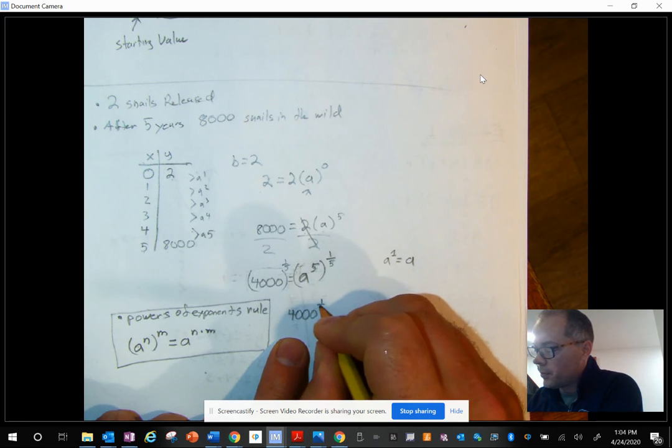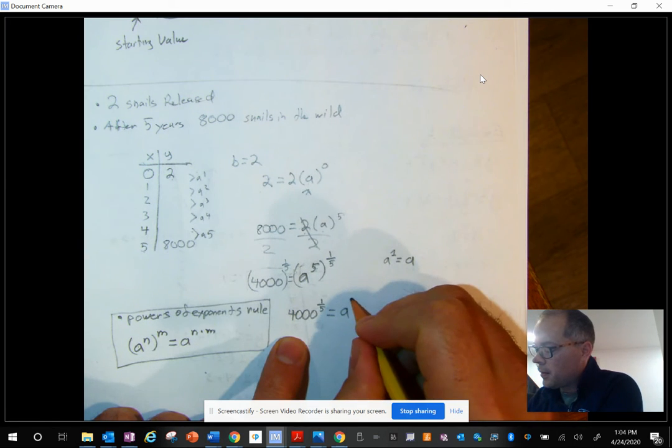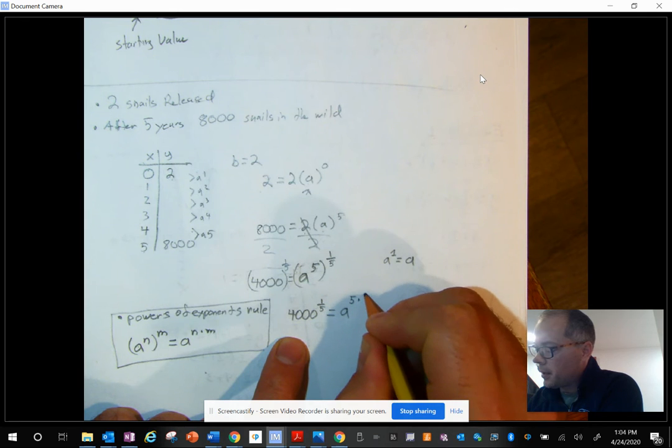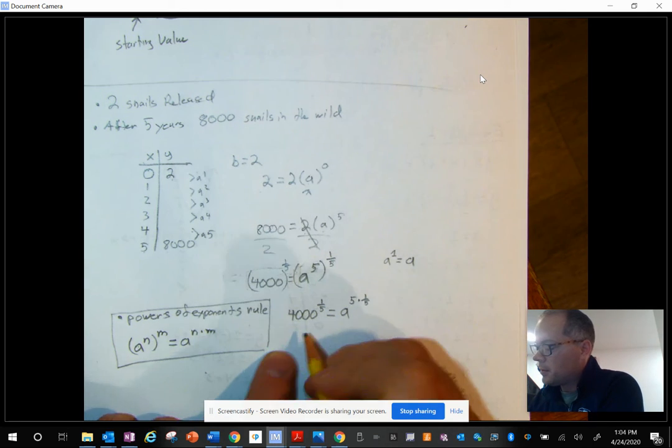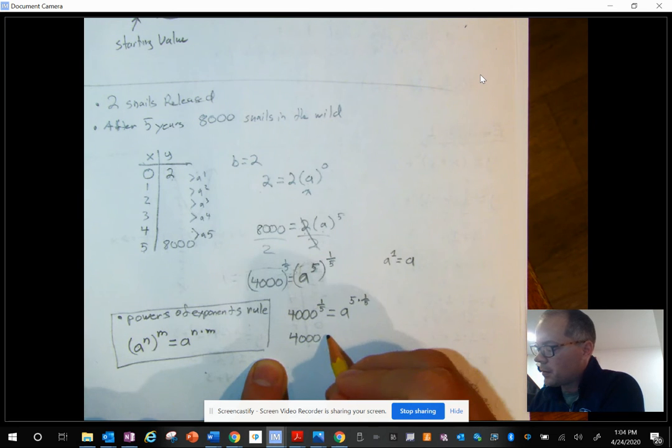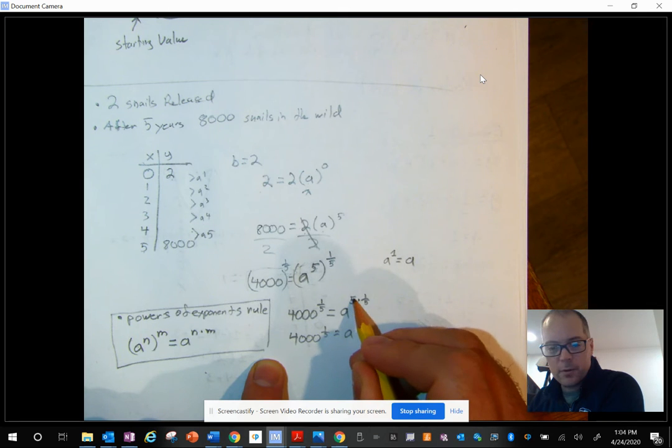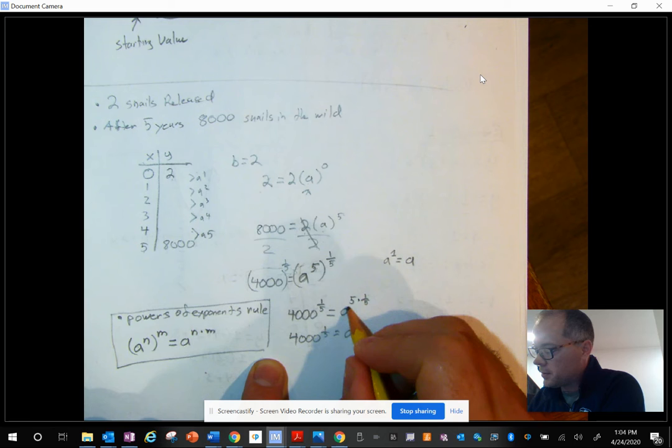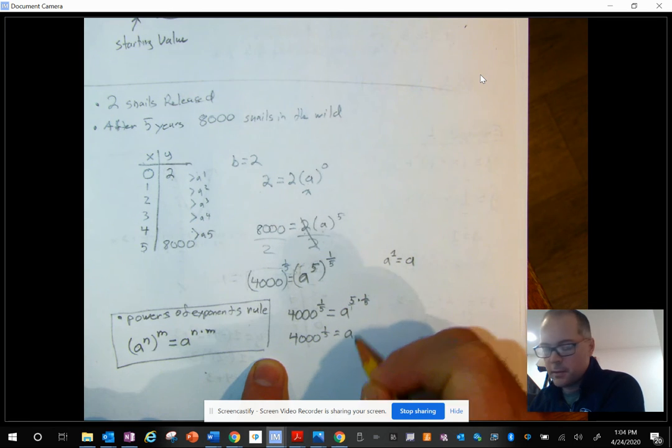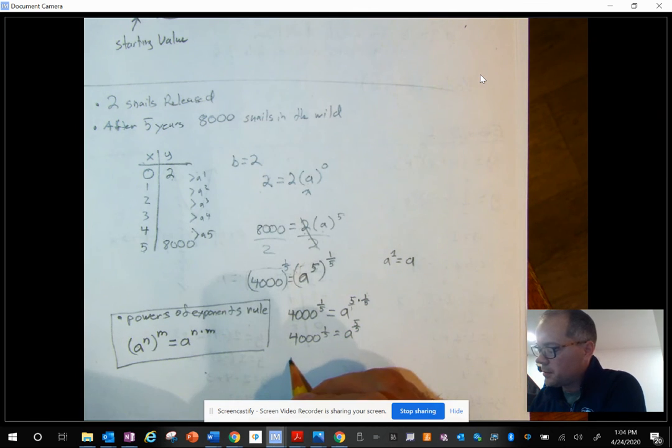4,000 to the 1 fifth power equals a 5 times 1 fifth. And that's the same thing as saying 5 over 5, right? Because if you multiply a whole number by a fraction, you're just multiplying the numerators. And this is the same thing as 5 over 1, isn't it? So this would be 5 times 1 and 1 times 5. So this equals a to the 5 over 5, which equals a to the 1st.